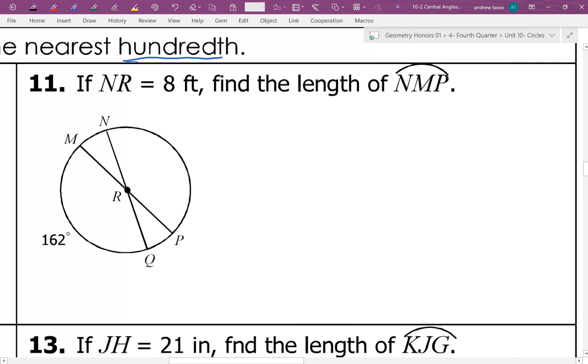Next one. So NR is 8 feet. So that's our radius. We're trying to find the length of this arc. So we have to find first its degree measurement. So let's look at that first.